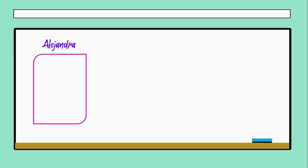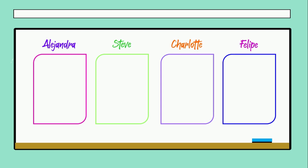We have the first student that is Alejandra, Steve, Charlotte, and Felipe. We have to give one cookie for each one. I have the first for Alejandra, the next for Steve, Charlotte, and Felipe. At this moment you can see that each student has one cookie.